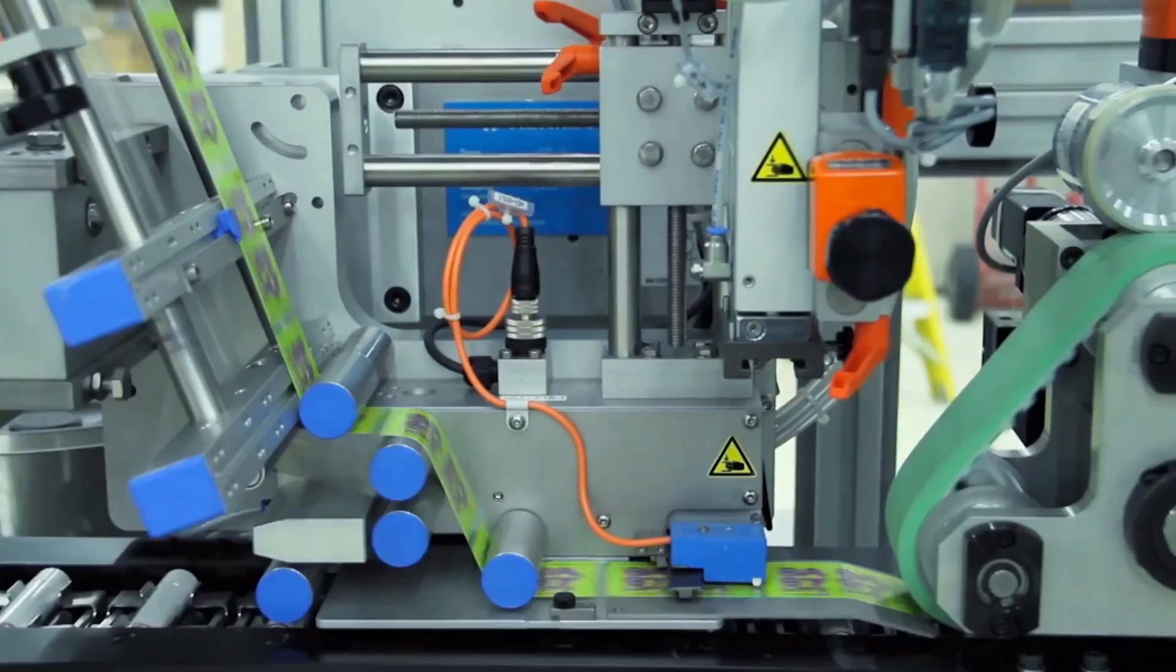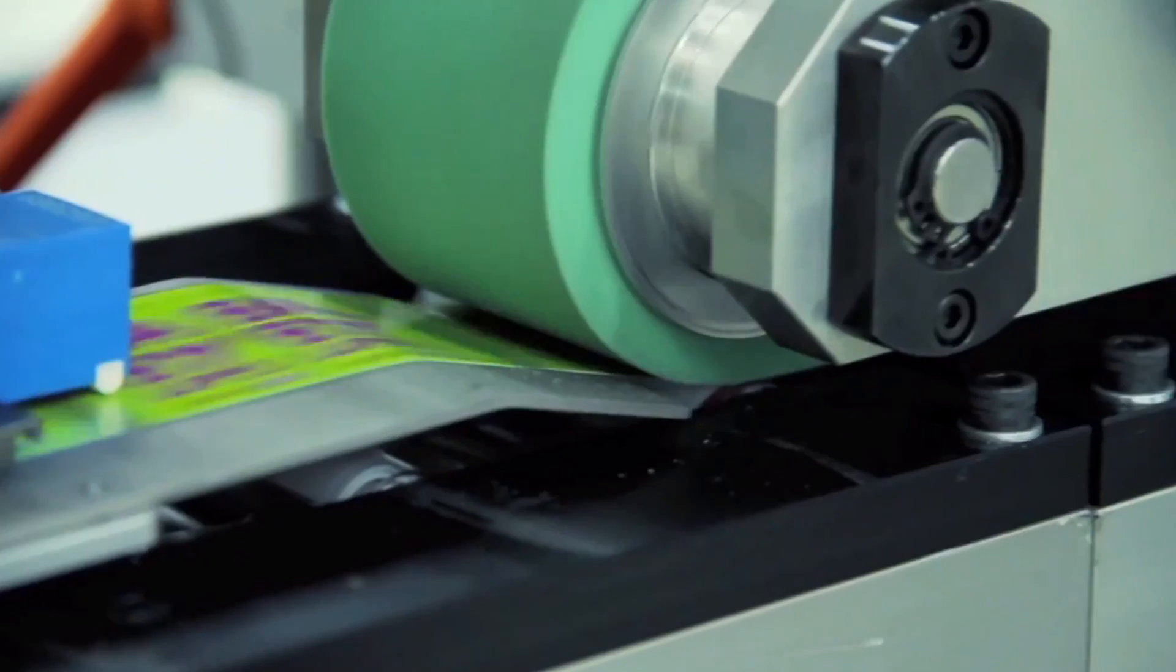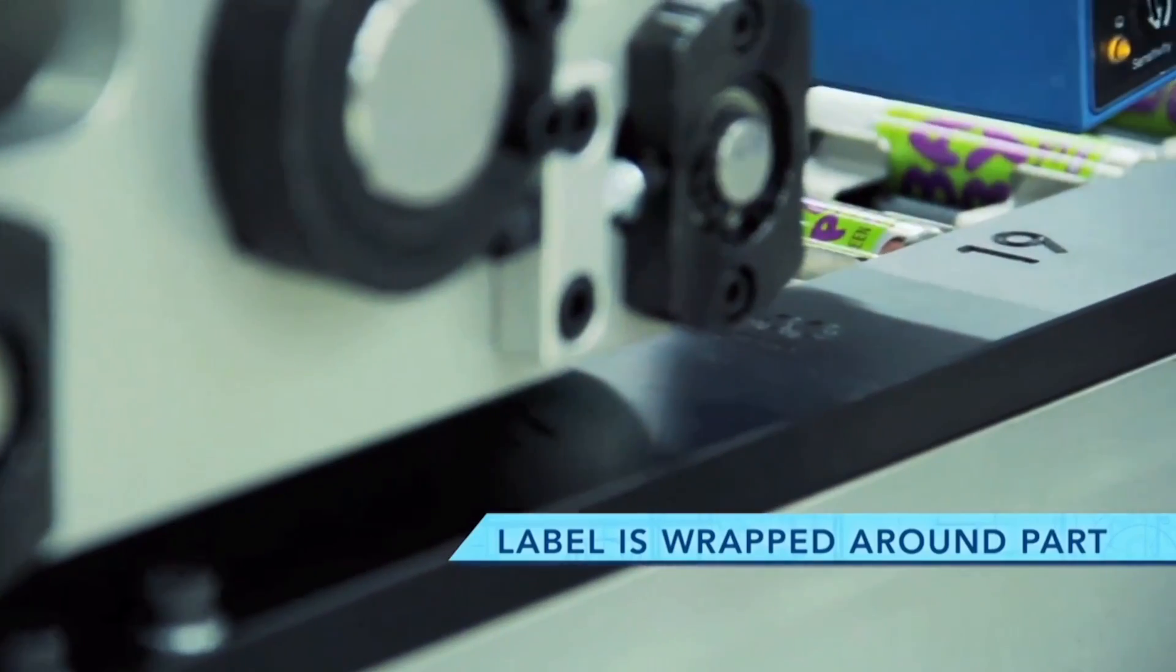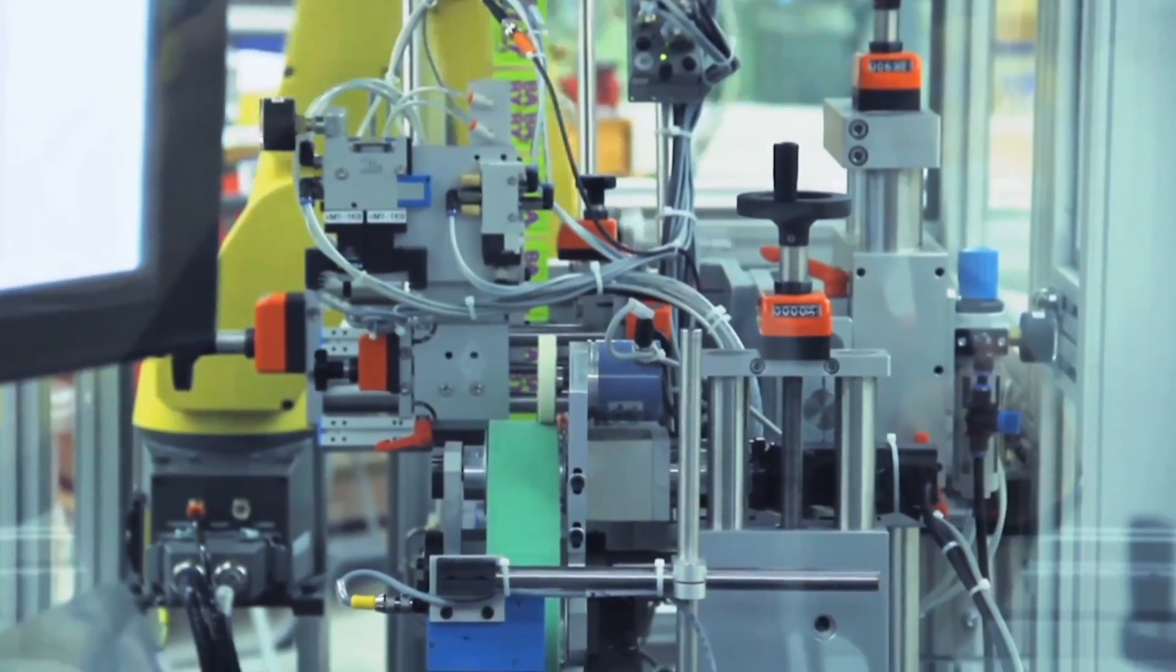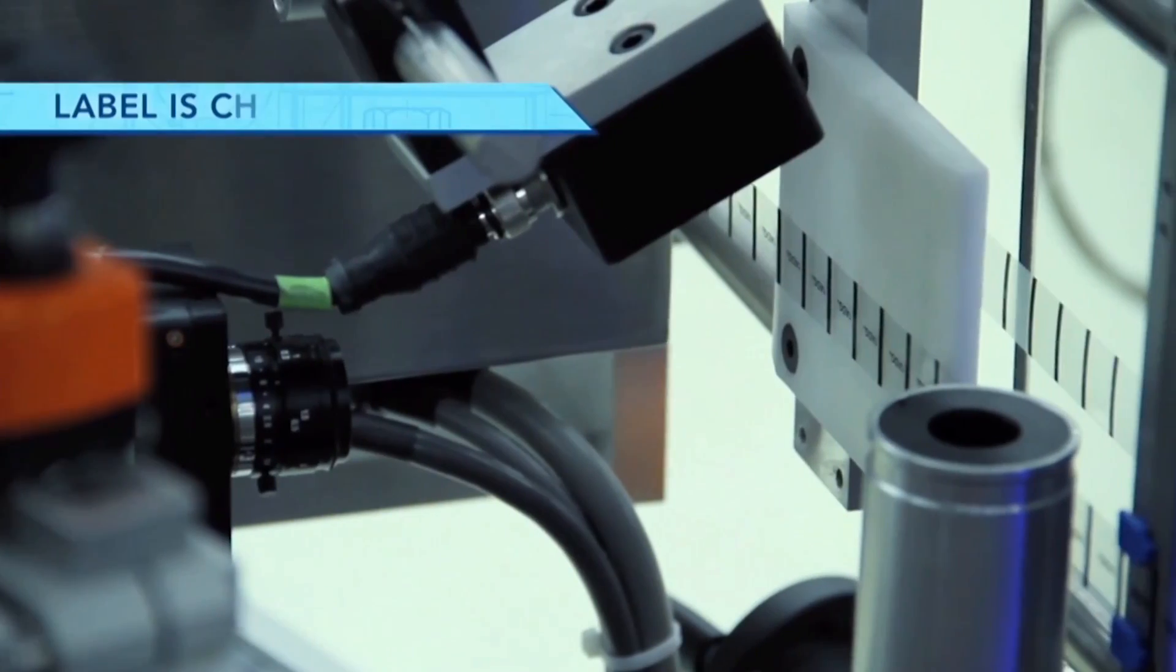The system starts with the first FANUC LR Mate robot picking and orienting unlabeled parts. Label is then wrapped around the parts. This wrap mechanism was specially designed to operate with a HERMA labeler.